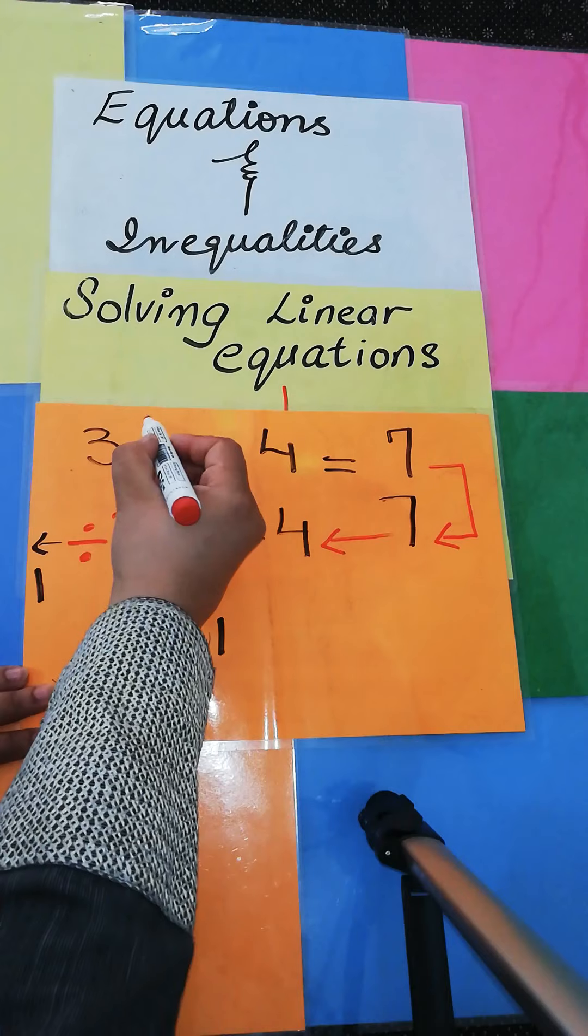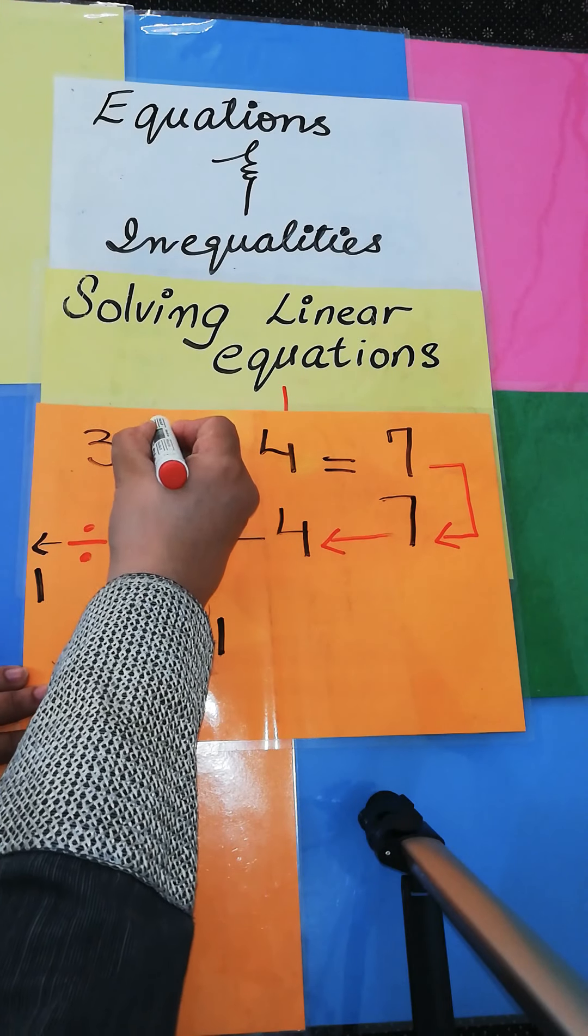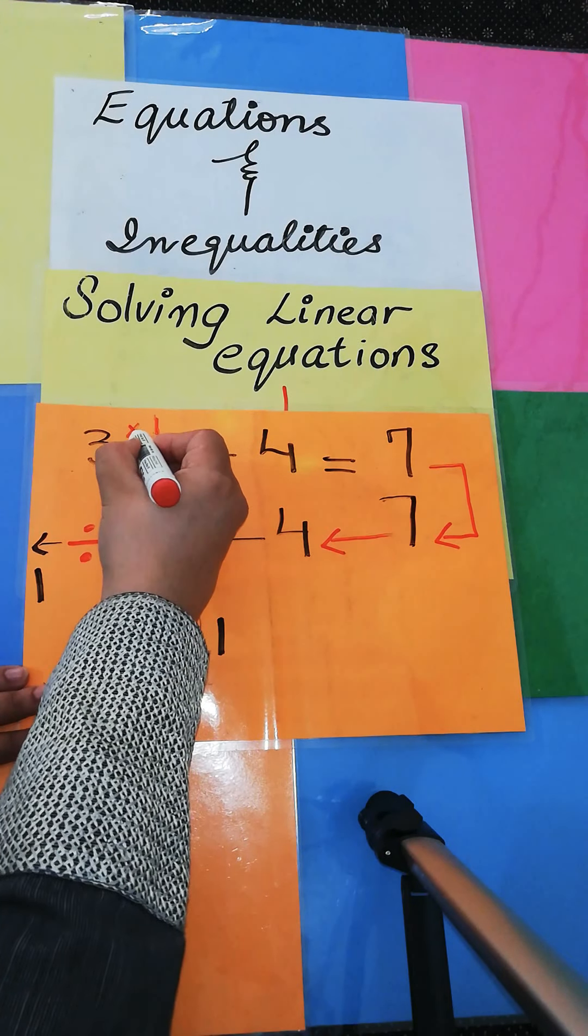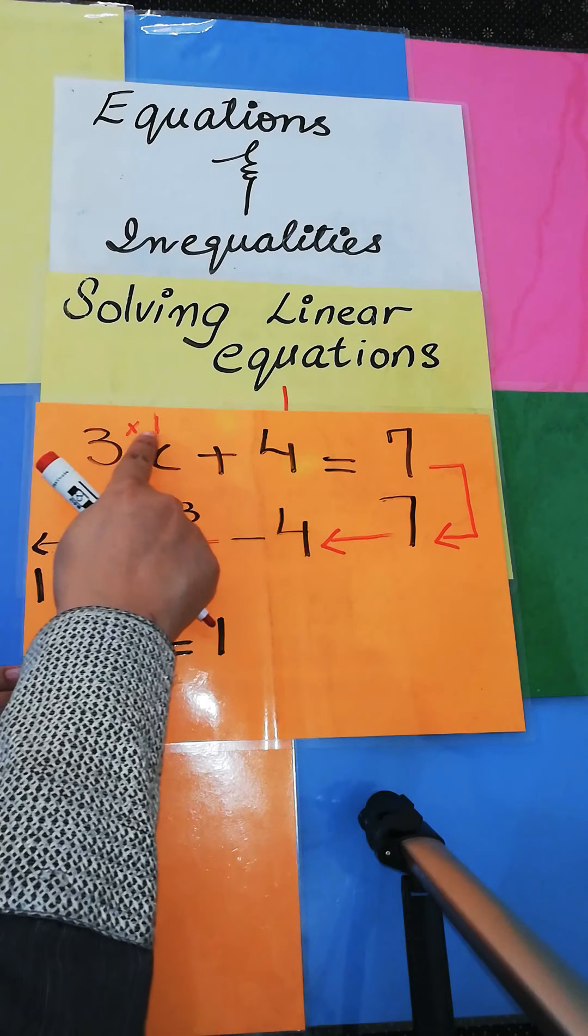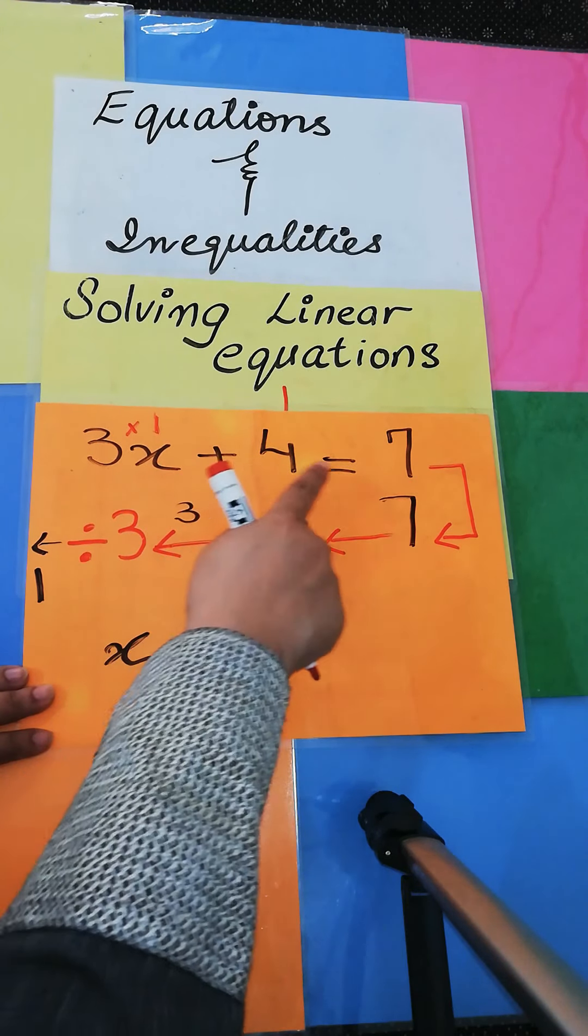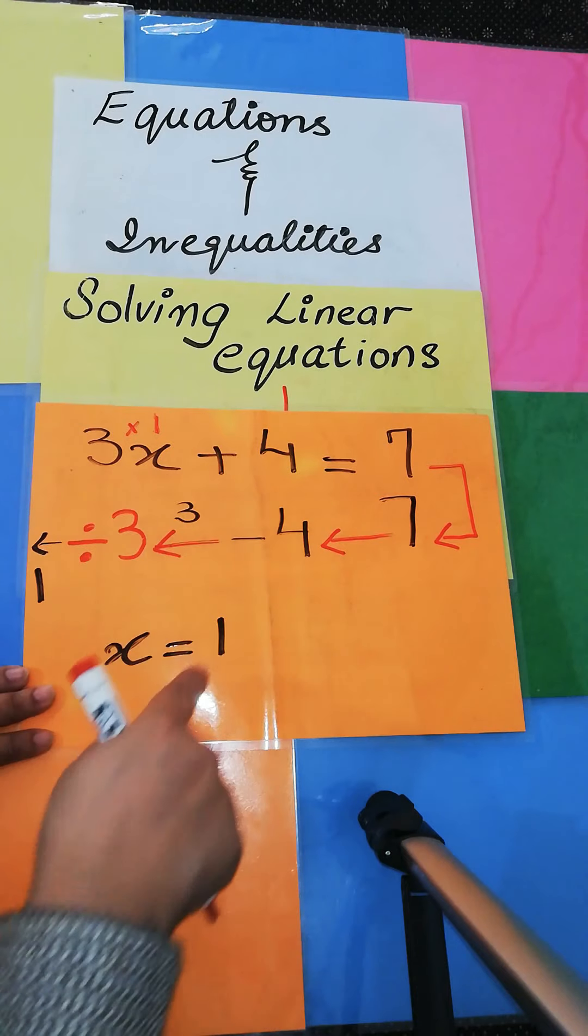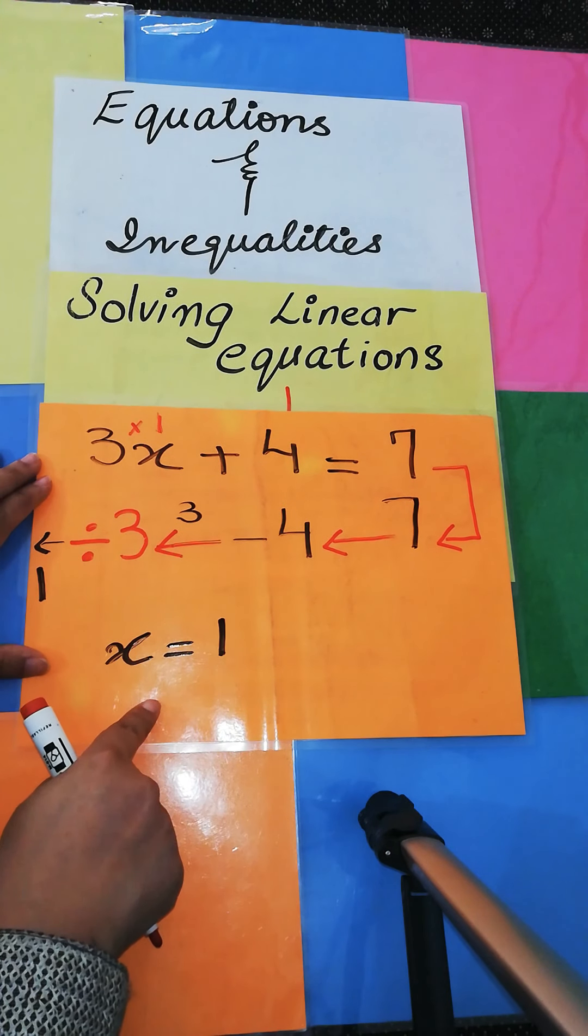For example, this is 1. You have put the value of 1. 3 multiply by 1 is 3, plus 4 is 7. It means that my answer is correct.